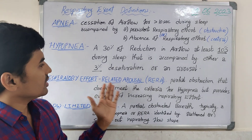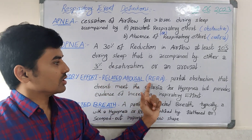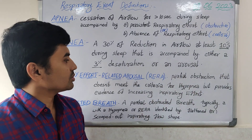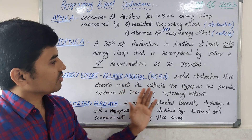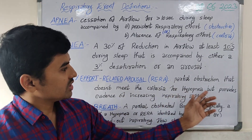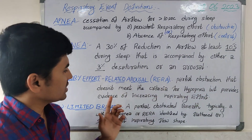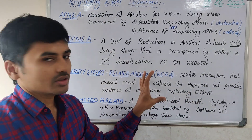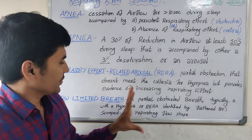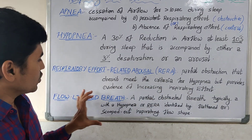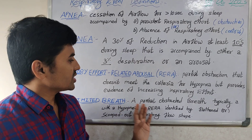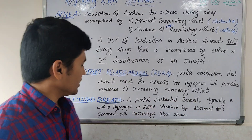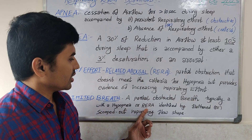Respiratory effort related arousal, or RERA, is a partial obstruction that doesn't meet the criteria for hypopnea but provides evidence of increasing inspiratory effort. This is RERA.